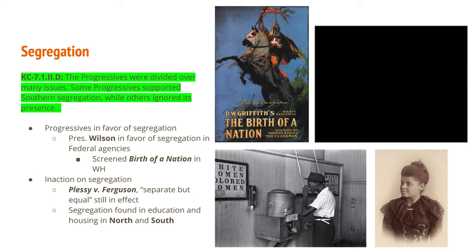The progressives were divided over many issues. Some progressives supported southern segregation while others ignored its presence. President Wilson is considered a very progressive president for his time; however, he was born in the south and still held some of those southern ways of thinking. While he was president, he screened one of the first full-length feature films, 'The Birth of a Nation,' which glorified the Ku Klux Klan as a good force in the United States. Plessy versus Ferguson, the 1896 court case, had made separate facilities for blacks and whites constitutional. The separate but equal doctrine was still in effect, and segregation was found in education and housing in both the north and the south.